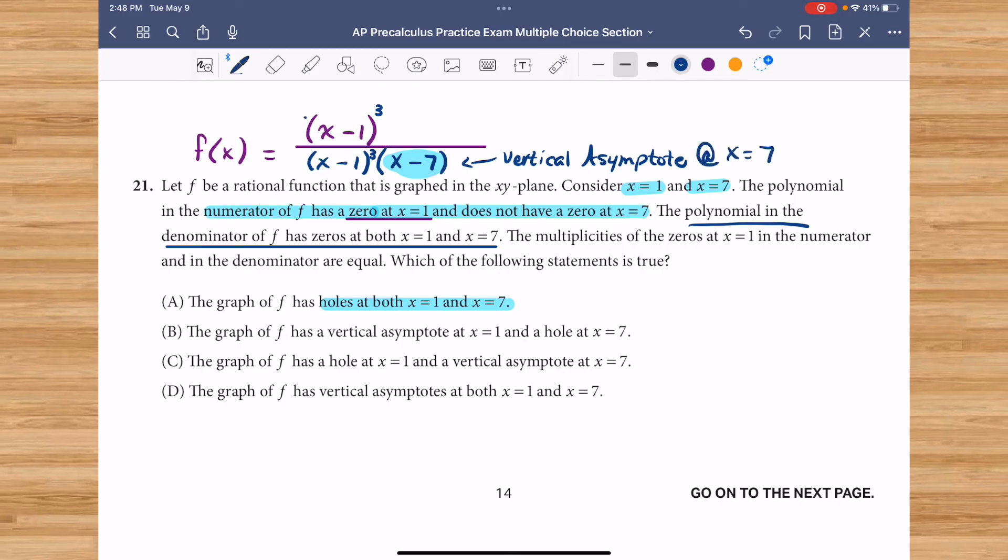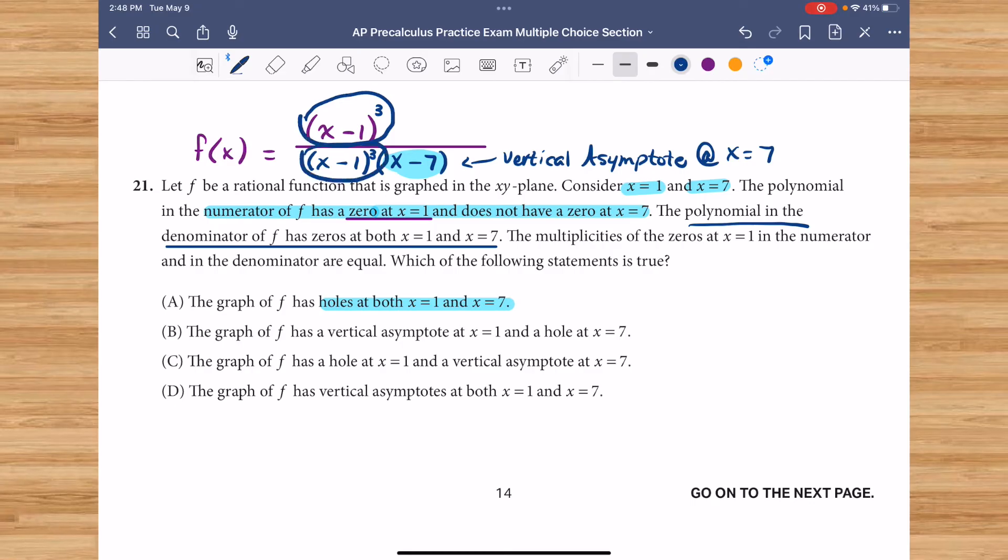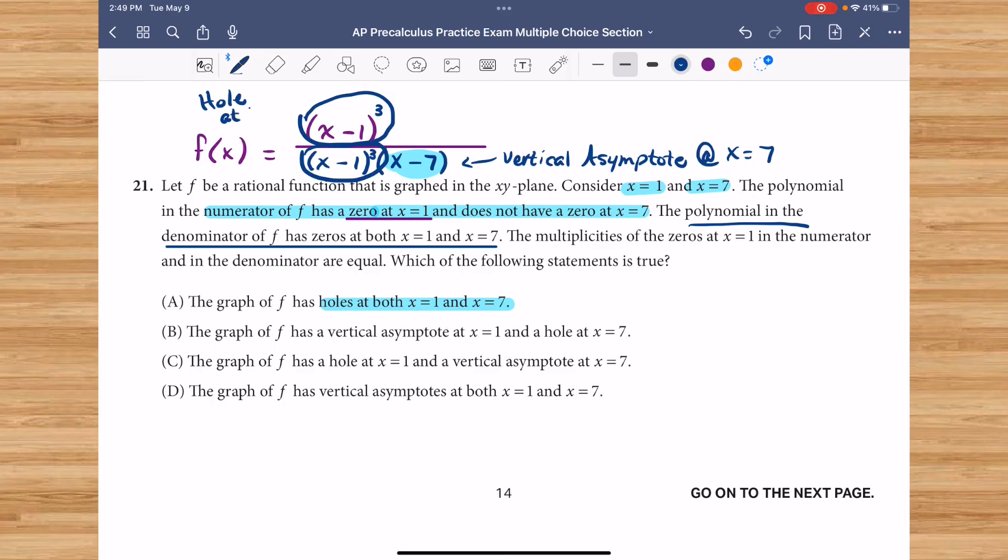And the fact that I have a matching factor, their degrees are the same, the fact that these match, this will create a hole at x equals 1. So we do have a hole at x equals 1, but not at x equals 7.